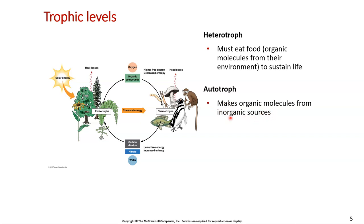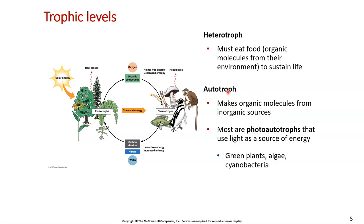An autotroph can take something inorganic like the sun and make its own organic molecules. If you dive into autotrophs a little more deeply, we have a more specific category called photoautotrophs. These photoautotrophs use light as a source of energy — 'photo' is related to light — and this includes green plants, algae, and cyanobacteria.